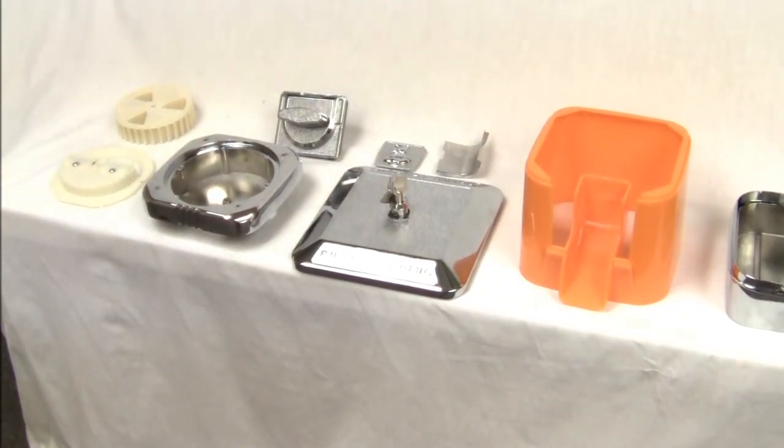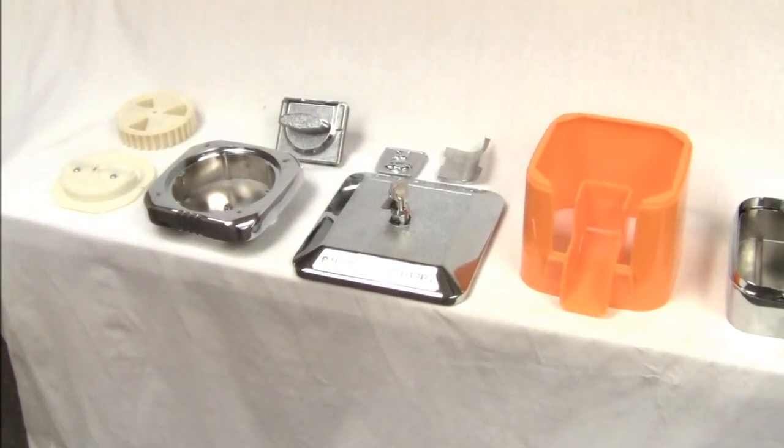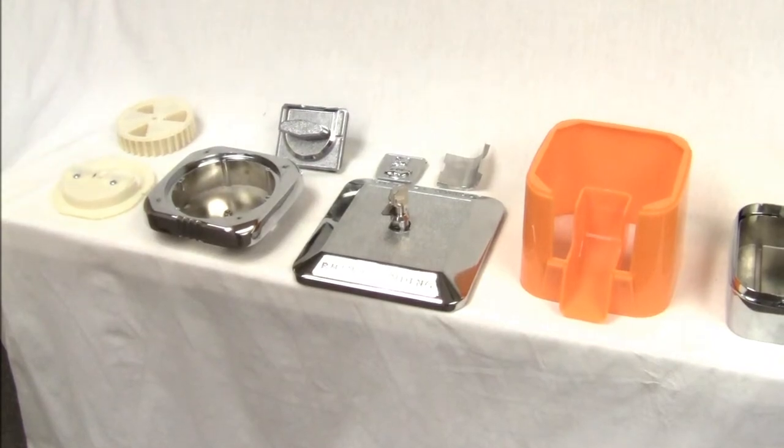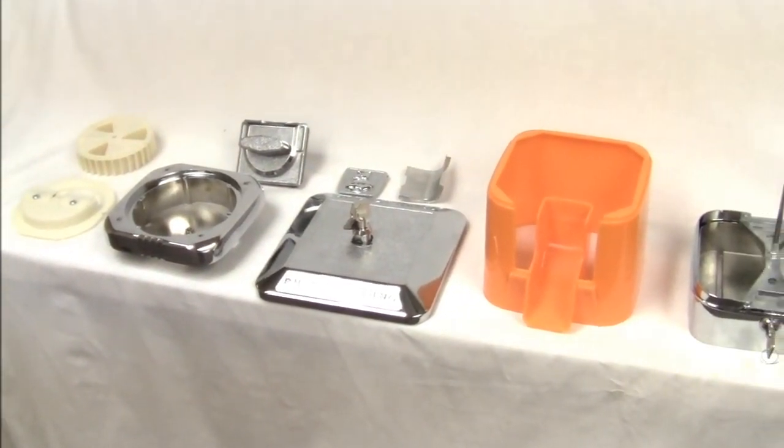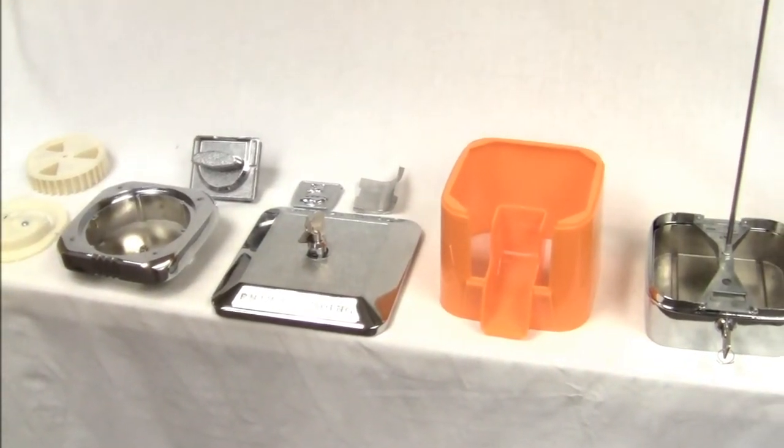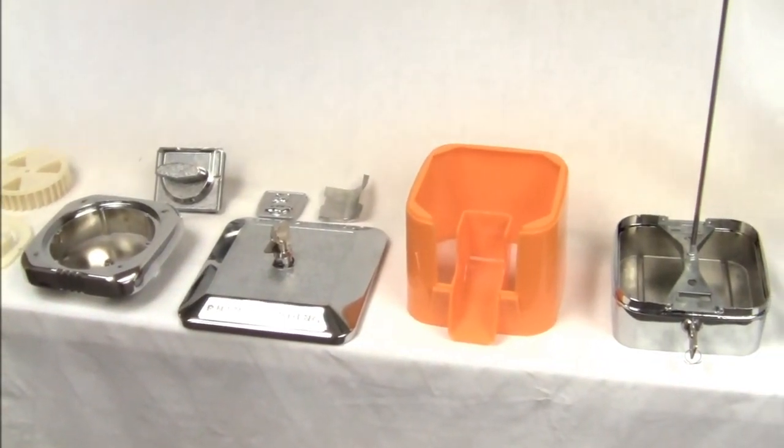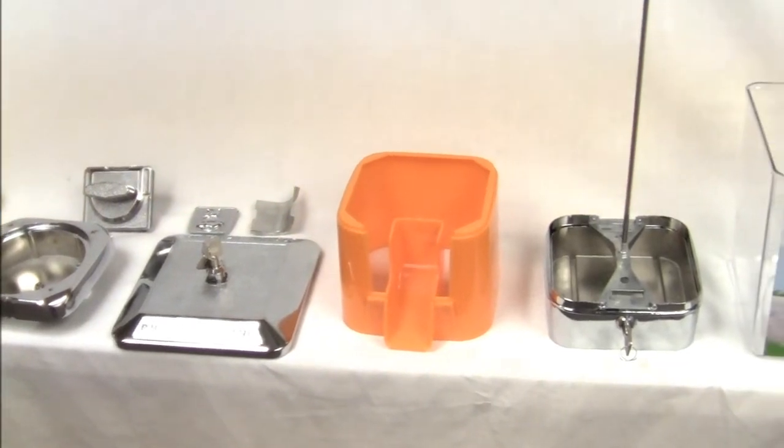These are all the pieces to your pet food vending machine. First you have the dispensing wheel, the chrome hopper, the coin mechanism, the chute door, the chute cover, the lid with the top lock and key, and the plastic body.